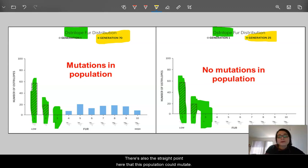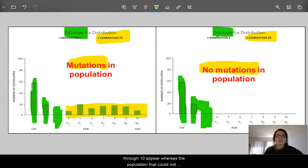There's also the straightforward point here that this population could mutate, this one could not. And finally, for the population that mutated, they had traits 4 through 10 appear, whereas the population that could not mutate didn't have these.